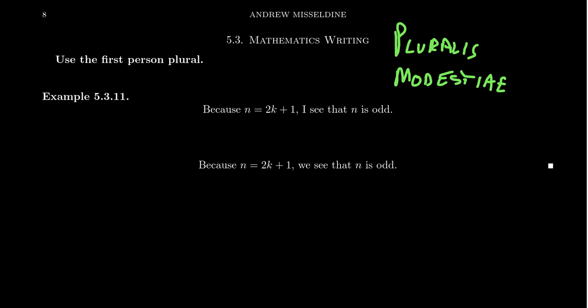What that means is that in mathematics, we actually use the pronouns we and us instead of things like I and me or you. We use the plural first person pronoun: we, us, our.